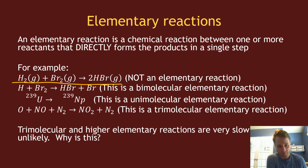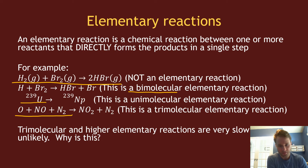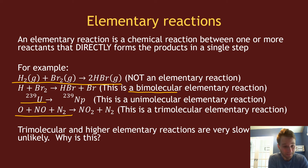An example of an elementary reaction is H + Br₂ going to HBr + Br. This is considered a bimolecular elementary reaction because it requires two reactants. We also have unimolecular elementary reactions — nuclear decay is a very common example. And then there are trimolecular elementary reactions, which are very slow and often not very likely to occur in an overall reaction mechanism.